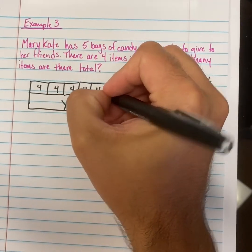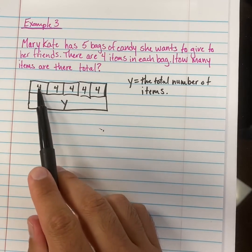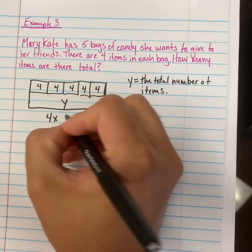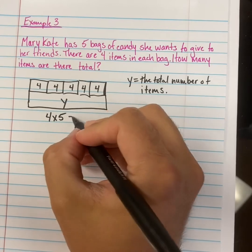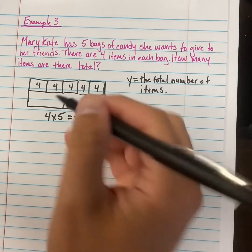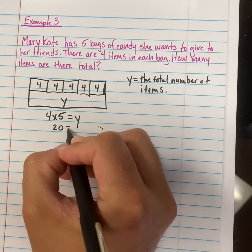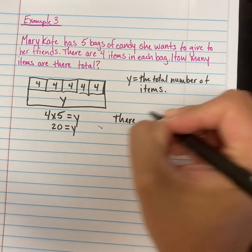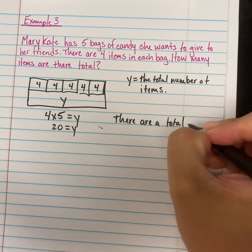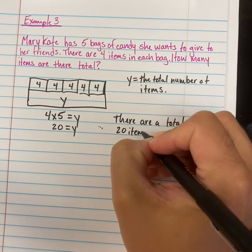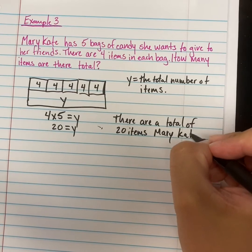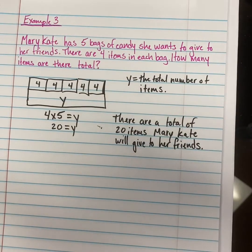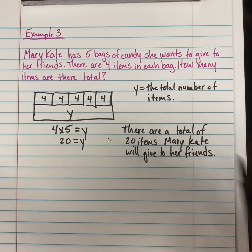This looks like repeated addition, or we could do this as multiplication. There are four items in each bag, four repeated five times. So if we were to write this as an equation, it would be 4 times 5, which is equal to y. What is 4 times 5? It's equal to 20. So y equals 20. The solution to this problem — how many items are there total? There are a total of 20 items Mary-Kate will give to her friends. Remember, it's always important to write a sentence to explain your answer to a story problem.